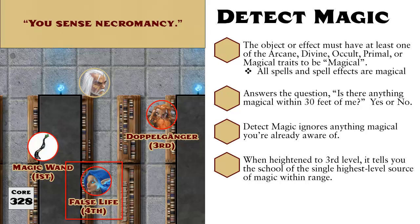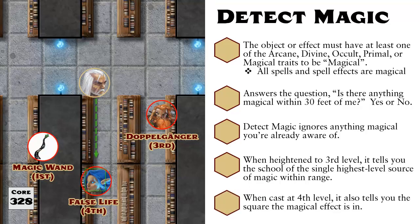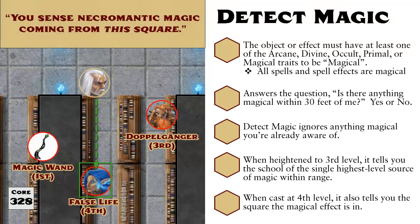Necromancy, because the highest level effect here is false life, which belongs to the necromancy school of magic. Detect Magic would not reveal any other information, like 'you sensed three magical sources, but the strongest is necromancy.' Effectively, the two weaker magical sources are smothered by false life and don't register at all. And if Detect Magic is heightened to 4th level, you know what square the source of the single highest level magic is. Using the previous example, the GM would say 'you sense necromantic magic coming from this square' and point to where the mage is standing. Detect Magic won't tell you what in that square is radiating necromantic energy — it could be the mage, a spell cast on the mage, an item the mage is wearing, or something else. And even heightened to 4th level, Detect Magic will only provide information about the single highest level source of magic. Everything else is smothered and is not detected by the spell.